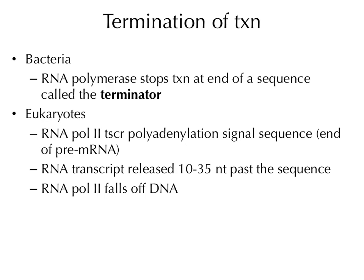Termination in bacteria: there's a specific sequence called the terminator that the RNA polymerase reaches, which causes it to fall off the DNA and transcription is done. In eukaryotes, there is a sequence called the polyadenylation sequence, which codes for many adenines to be added on. That's going to be the end of the mRNA, and the RNA polymerase eventually falls off once it's past that sequence.